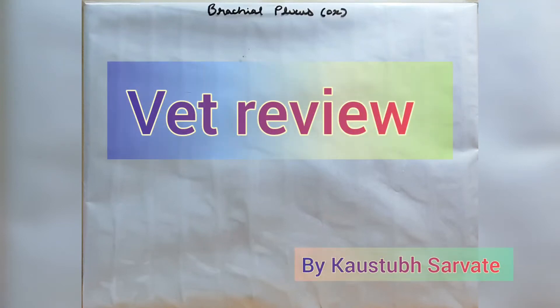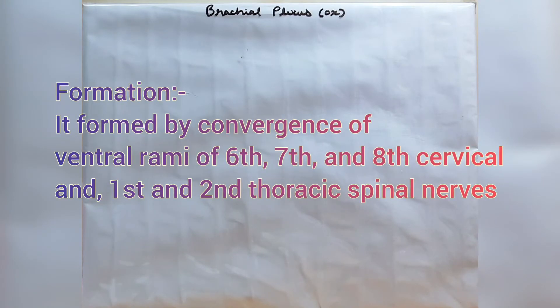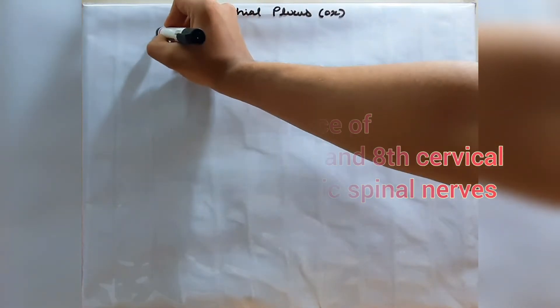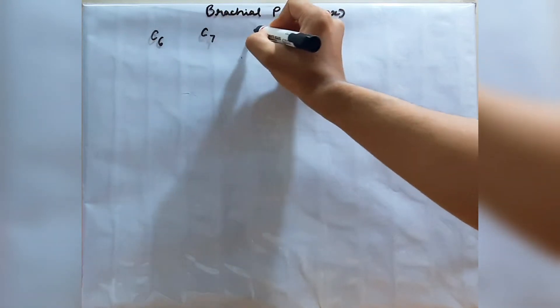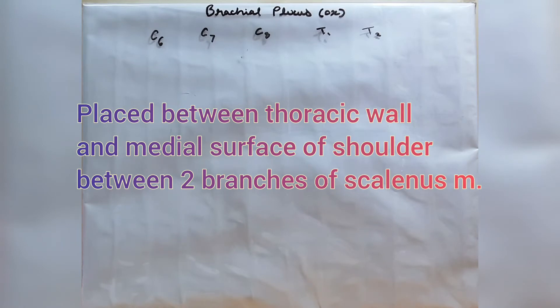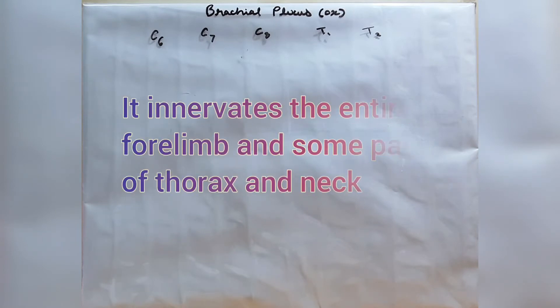Welcome to Better View. In this video I'm going to talk about the brachial plexus of ox. The brachial plexus is formed by convergence of ventral rami of C6, C7, C8, T1, and T2 spinal nerves — the 6th, 7th, and 8th cervical nerves and the 1st and 2nd thoracic nerves. It is placed between the thoracic wall and the medial surface of the shoulder, supplying innervation to muscles and skin of the entire forelimb and certain parts of the thorax and neck.